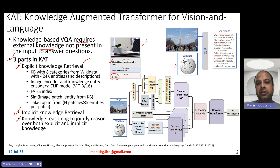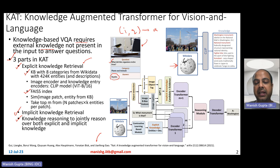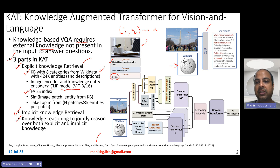What is explicit knowledge retrieval? You have input as image and input as question, and you want output as the answer. To use extra information like Wikidata, the authors took a subset of Wikidata — specifically, they built a knowledge base with eight categories containing 424,000 entities along with their descriptions. This is stored in a key-value store supported by a FAISS index. The key is an embedding computed using an image encoder and knowledge entry encoders. To index the knowledge base, they encode knowledge entries using the CLIP model, and encode them so as to put them into the FAISS index.